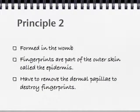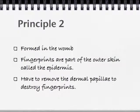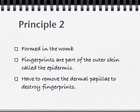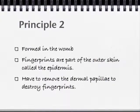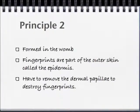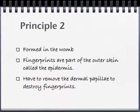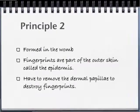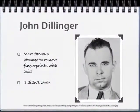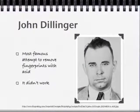Fingerprints are formed in the womb. They are part of the outer skin called the epidermis. As previously stated, you have to destroy the dermal papillae to destroy a fingerprint. John Dillinger tried to remove his with acid — it didn't work.